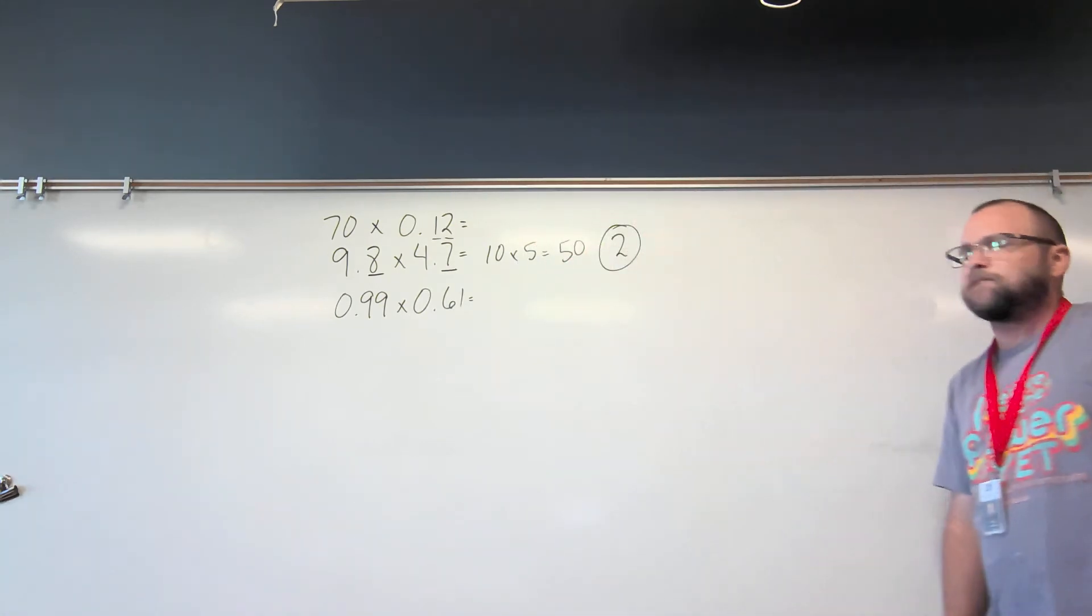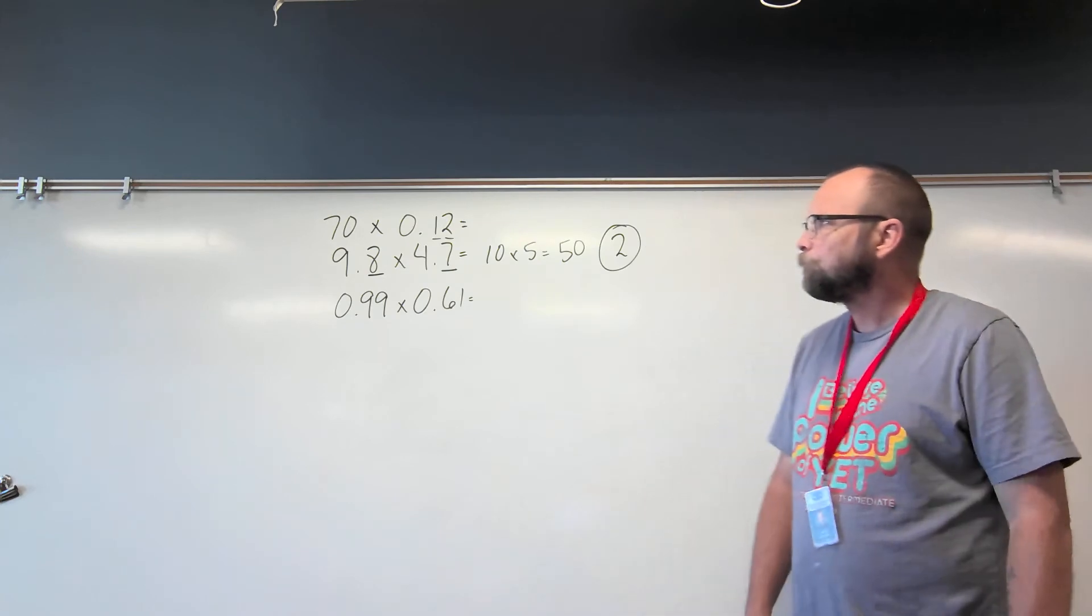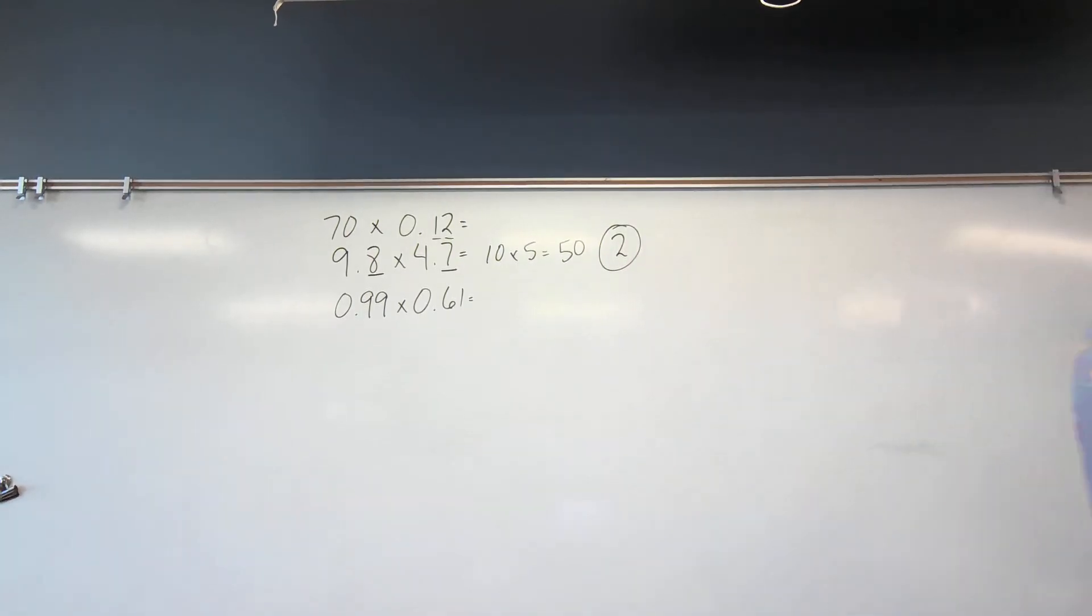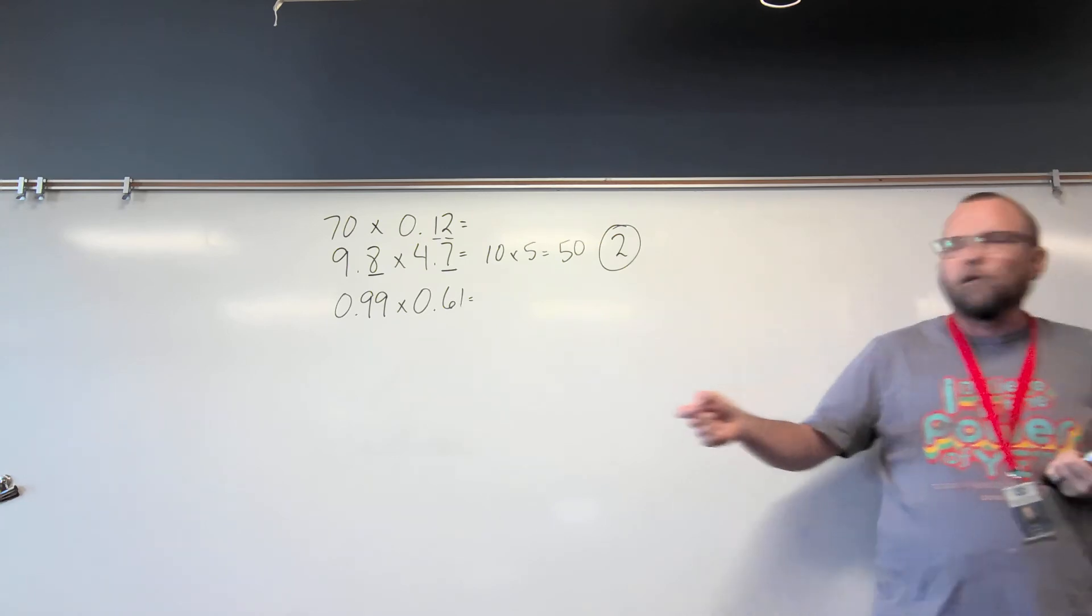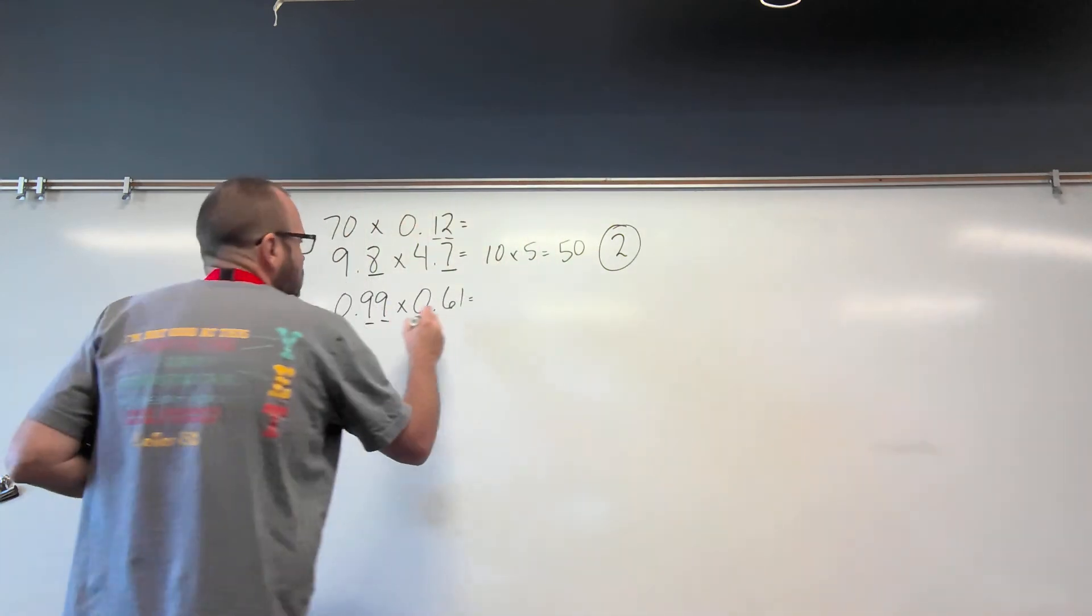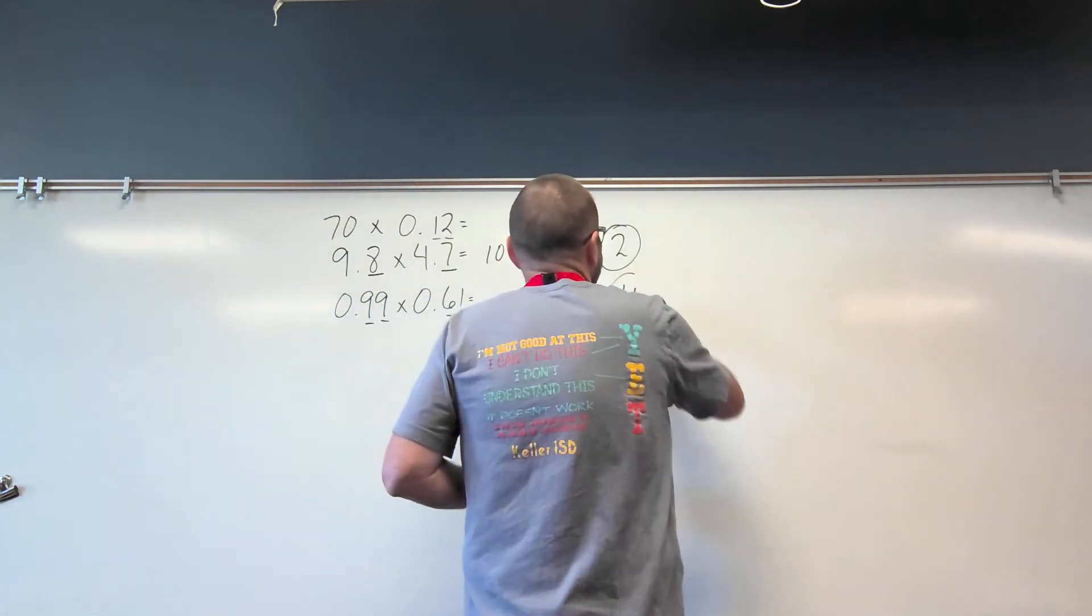All right. We have 99 hundredths times 61 hundredths. All right. So what do you help me here? Okay. So my answer is going to be somewhere around 1. Greater than or less than 1? Less than 1. My answer is going to be less than 1 because I'm multiplying by numbers that are less than 1. Layla, how many numbers behind my decimal point in my answer? Four. There's two behind it here and two behind it here. So there's four numbers behind my decimal point in the problem. So I know it's going to be less than 1 with four numbers behind my decimal point.